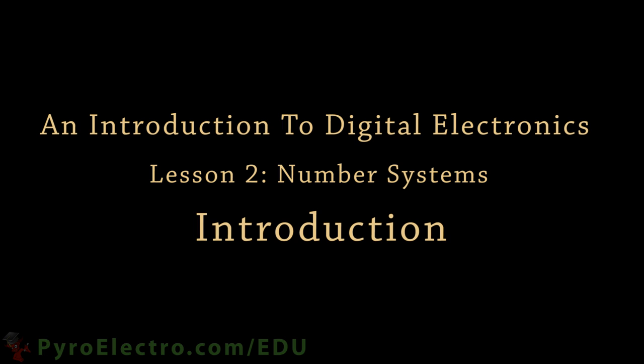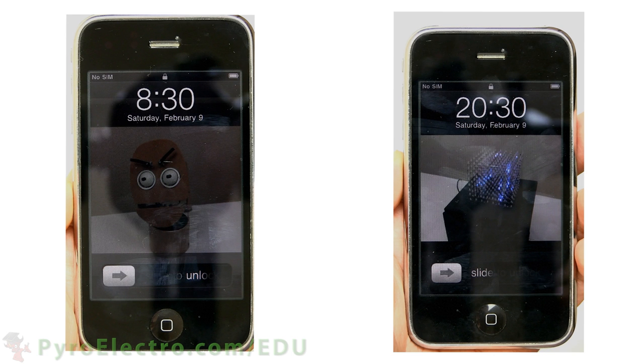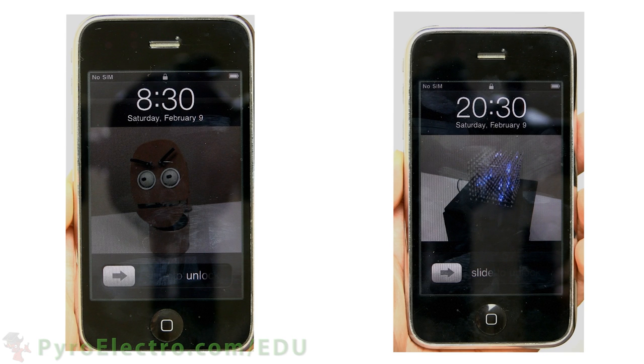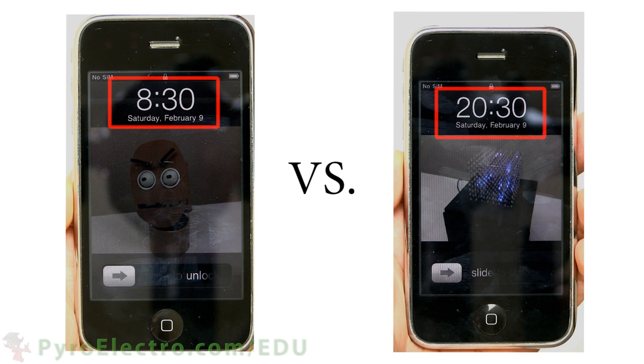Numerical systems can be seen in many forms around us every day. The 24-hour clock and the 12-hour clock are two simple examples of two different systems that ultimately represent the same information.